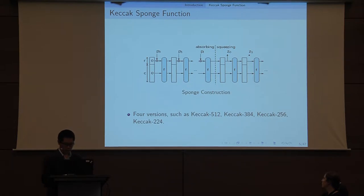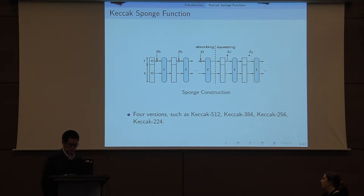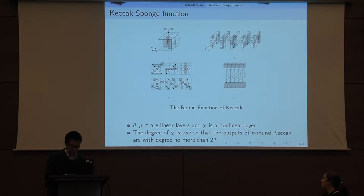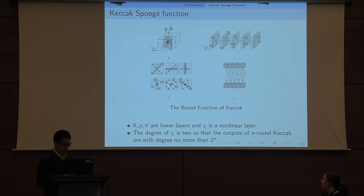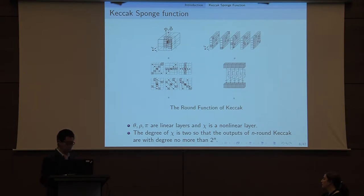Here is the construction of the Keccak sponge function. Because of the different sizes of input, there are four versions. The round function of Keccak has five steps. Because the IOTA step will not impact our result, we omitted it here. The first three steps are linear ones, and the CHI step is a non-linear one. The degree of CHI is 2, so the outputs of n-round Keccak are with a degree no more than 2 to the n.